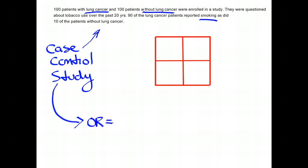Odds ratios are just that — a ratio of odds. So in this case, it would be the odds of being exposed to cigarette smoking if you have lung cancer, divided by the odds of being exposed to cigarette smoking if you don't have lung cancer.